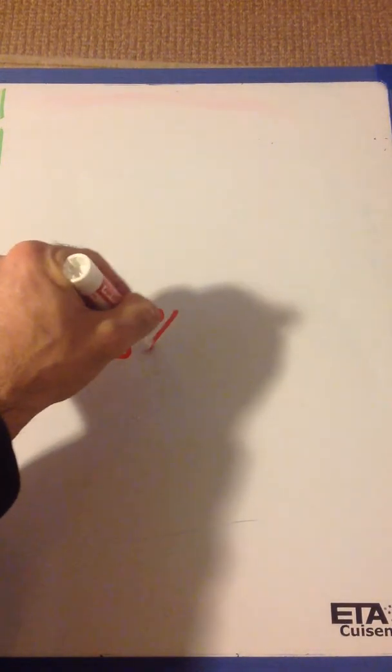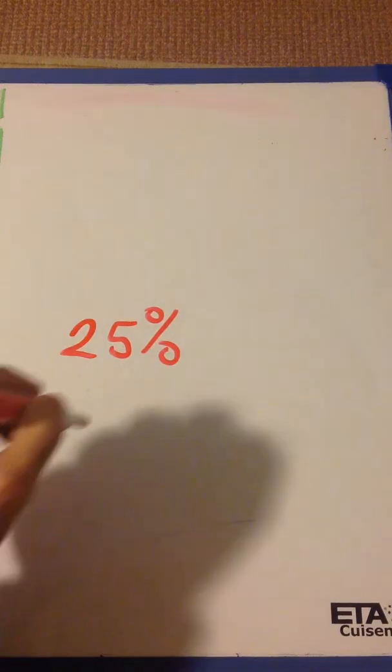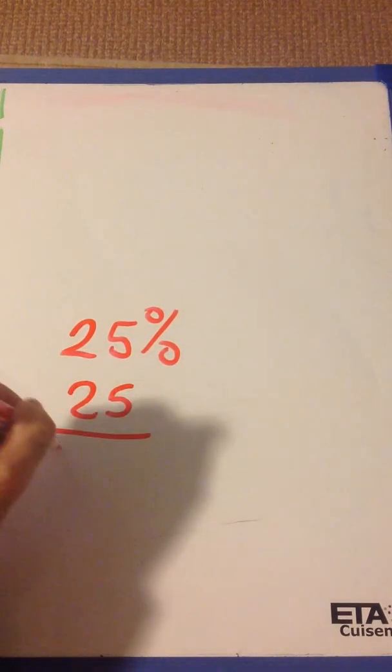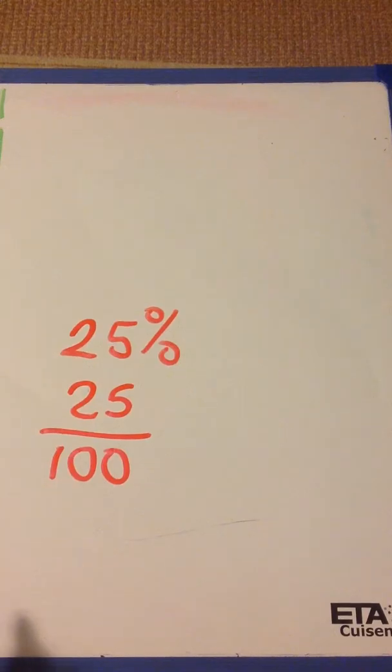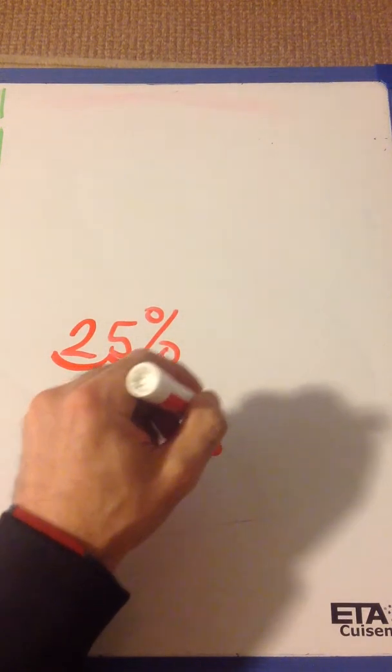How would you do 25%? Well, again, the percent sign tells us it's 25 over 100. And to get the decimal, we just move it twice. 1, 2, 0.25.